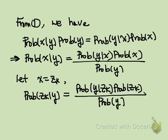From fact 1, we have that probability of X given Y times probability of Y equals probability of Y given X times probability of X. Now, by dividing each side by probability of Y, we get that probability of X given Y equals probability of Y given X times probability of X divided by probability of Y.